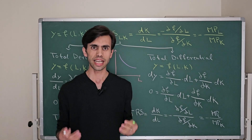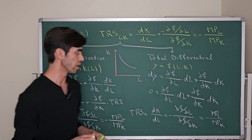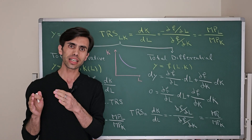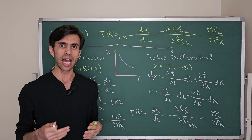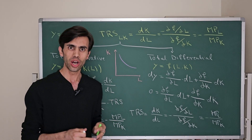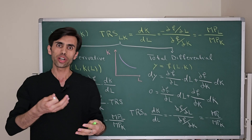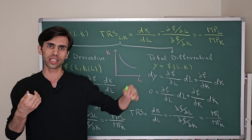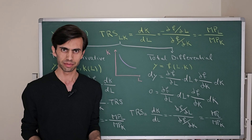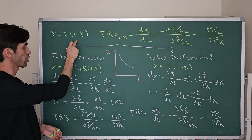Welcome. Let's talk about Technical Rate of Substitution. What is Technical Rate of Substitution, or in short TRS, and how we can derive it. TRS is the rate at which one input can be substituted for another while keeping the output level fixed. For example, if we have a production function y = f(L, K).